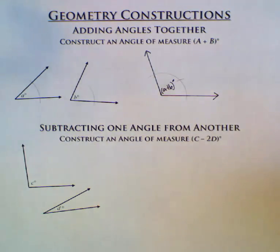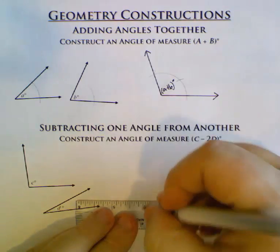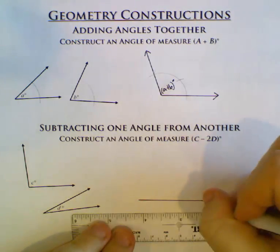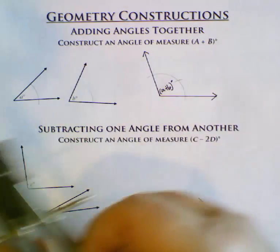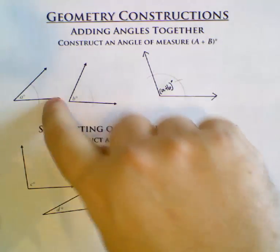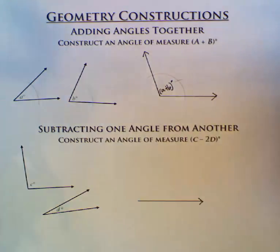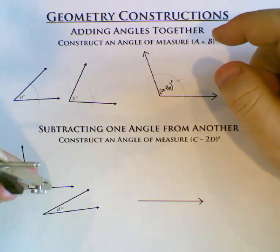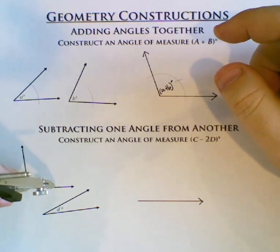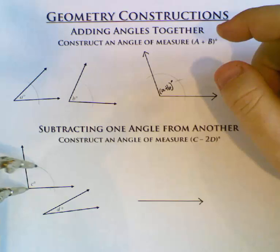For the bottom construction, I'm going to do Subtract instead of Add. So we're going to start off kind of the same way. First we're going to make one side of our angle. Then I'm going to make, again, like I have three sets of arcs up here, I'm going to make three sets of arcs down here. I'm going to make sure that the first two cross both sides of my angle.